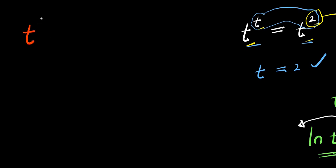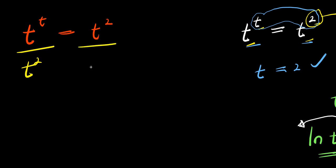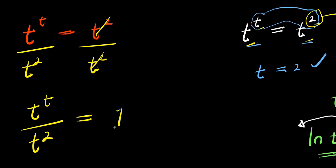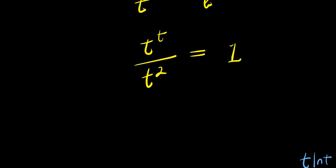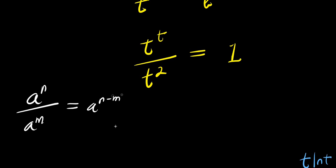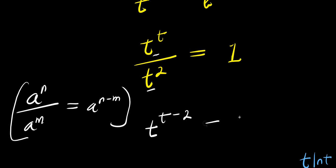Let's consider another method using the same equation: t to the power of t equals t to the power of 2. In this method, I divide both sides by t to the power of 2. The right side becomes 1, and applying the exponent identity — a to the power of n divided by a to the power of m equals a to the power of n minus m — I get t to the power of t minus 2, and this equals 1.